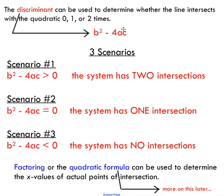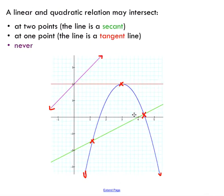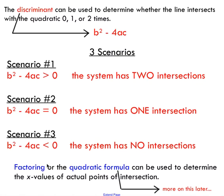A quick review on the discriminant. Typically we use the discriminant to determine the number of x-intercepts a quadratic has. We can also use the discriminant to determine whether a line intersects a quadratic zero, one, or two times. If the discriminant is greater than zero, you have two intersections. If it equals zero, you have one intersection. If it's less than zero, you have no intersections. We can use factoring or the quadratic formula to determine the actual points of intersection.